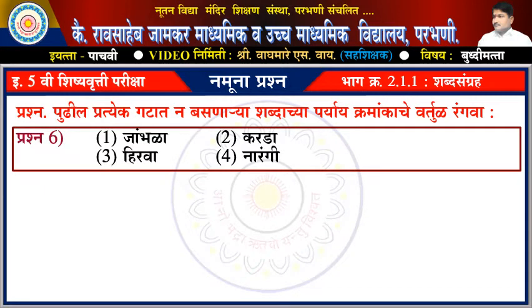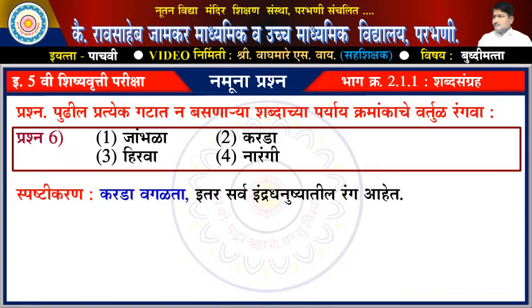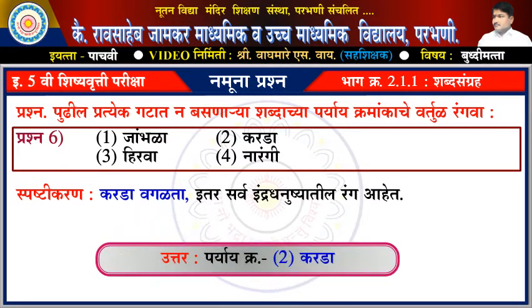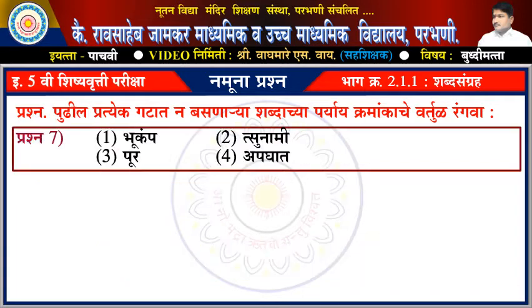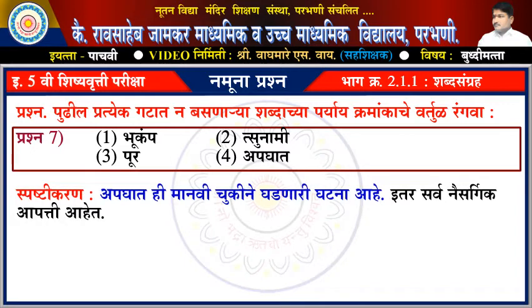પ્રશ્ન સહાવ્વા: એક જામળા, દોન કરડા, તીન હિરવા, ચાર નારંગી. સ્પષ્ટિકરણ: કરડા વગળતા ઈતર સર્વ ઇન્દ્ર ધનુષ્યાતીલ રંગ આહેત. ઉત્તર: પર્યાય ક્રમાંક દોન - કરડા.